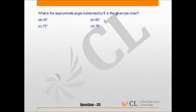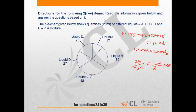Next question, that is 35: What is the approximate angle subtended by E in the given pie chart? The quantity of E is 25 ml and the total mixture is 125 ml, that is approximately equal to 1 by 6.